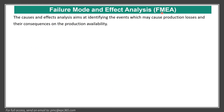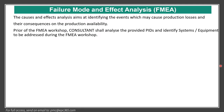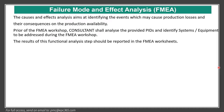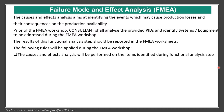Failure Mode and Effect Analysis — FMEA. The cause and effect analysis aims to identify events which may cause production losses and their consequences on production availability. Prior to the FMEA workshop, the consultant shall analyze the provided P&IDs and identify systems and equipment to be addressed during the workshop. The result of the functional analysis step should be reported in the FMEA worksheets, and the following rules shall be applied during the workshop.